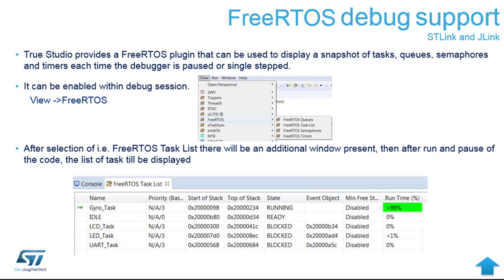FreeRTOS has debug support for different toolchains. One of them is Atollic Studio, but it also has plugins for other toolchains like IAR. If you enable FreeRTOS support in IAR, it will publish a couple of windows where you can access the FreeRTOS structures. Atollic has these already in the basic installation, and when FreeRTOS is used you can find it in the menu View under the FreeRTOS group.